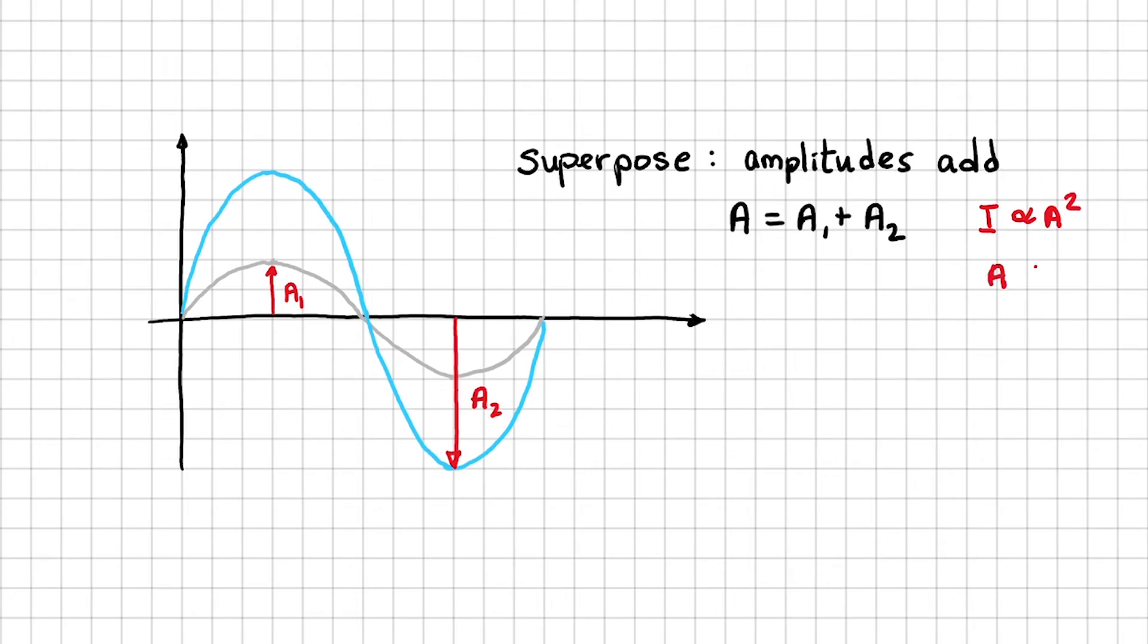I can rewrite this and say that amplitude is proportional to the square root of intensity. The question tells me that the intensity of the first wave is just i. This implies the amplitude is the square root of i. Intensity of the second wave is 2i, so the amplitude must be square root of 2i.